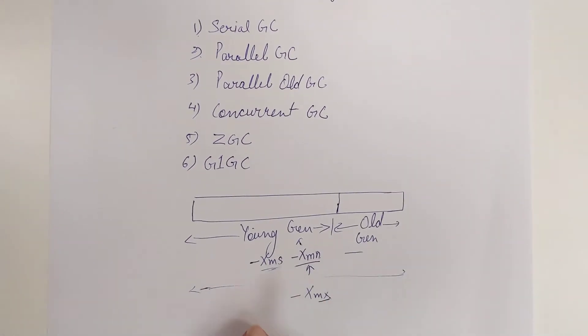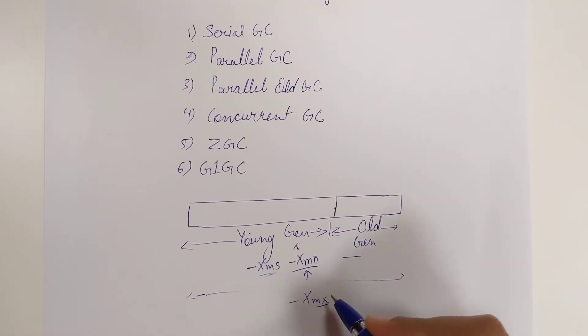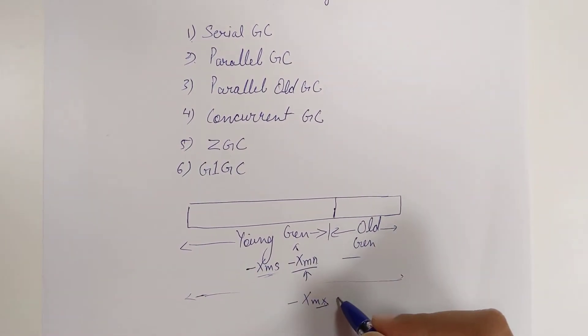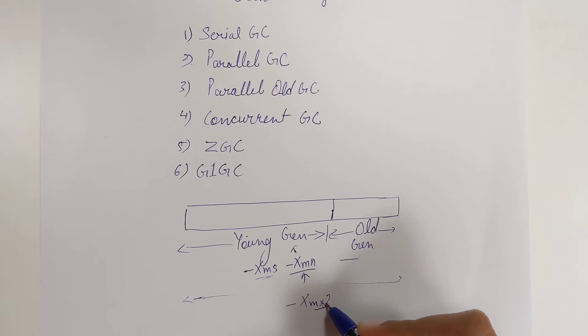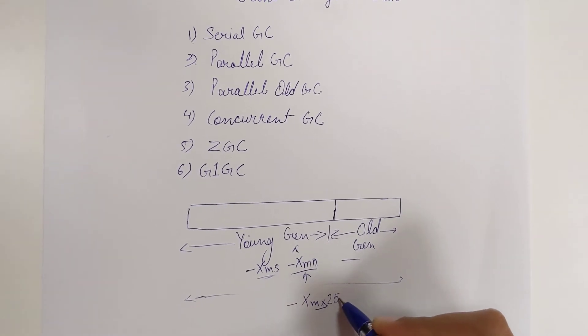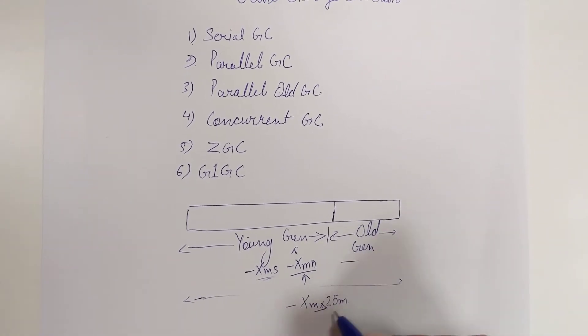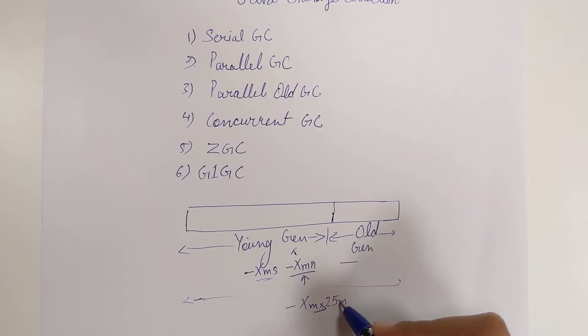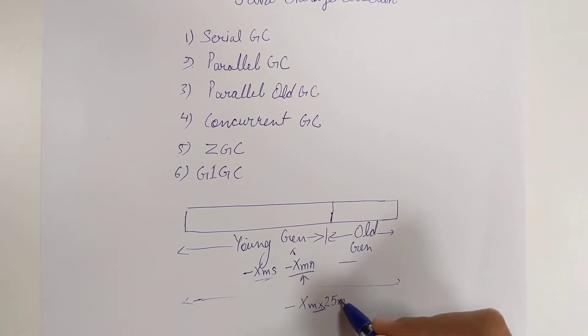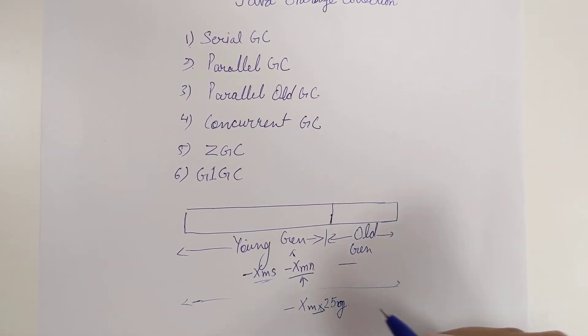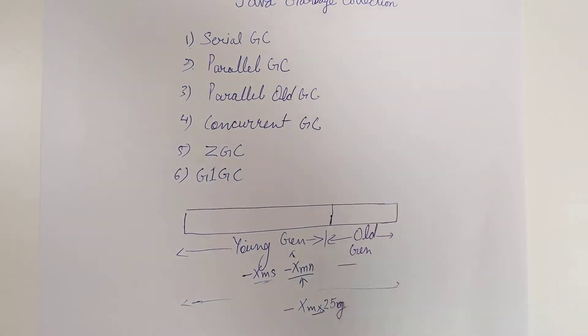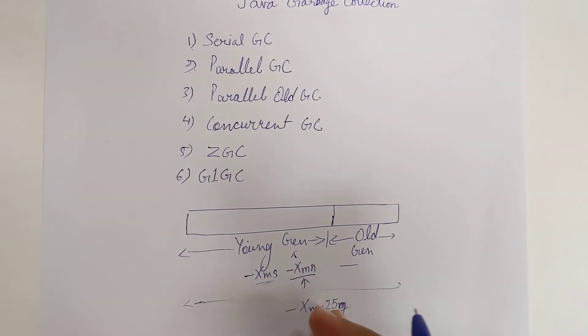The whole size is XMX and you can specify how much memory you want to give to the old gen. Suppose you want to give 25 MB, you can specify 25M. If you want to give in GB, you can specify 25G. Here also you can specify the size, and the rest of the size is the old gen size, calculated as XMX minus XMN.